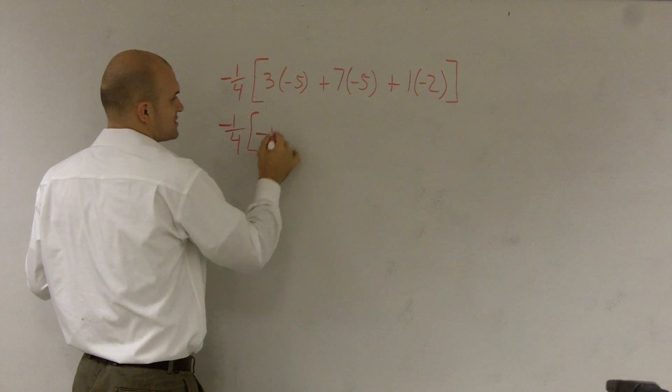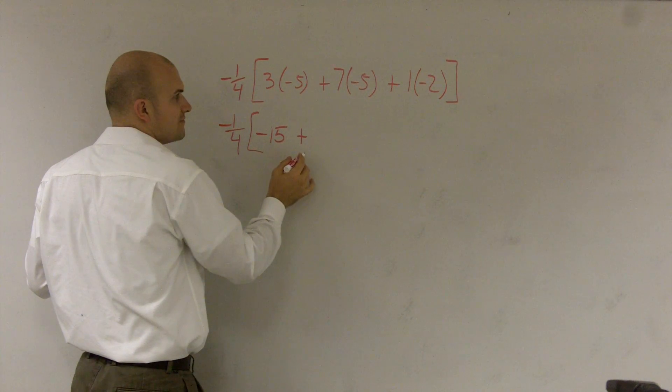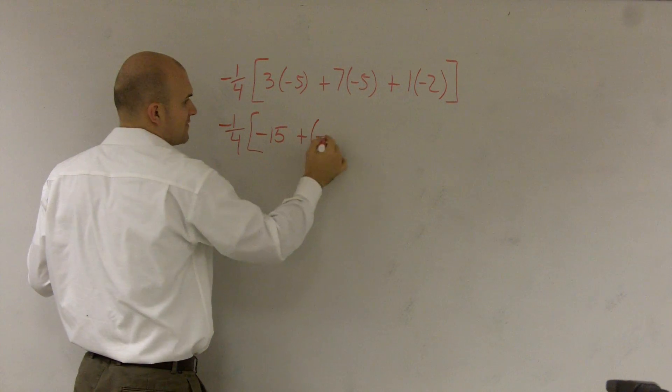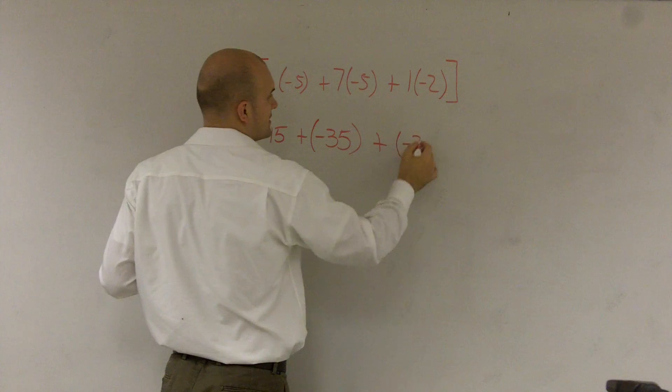I do 3 times -5, which is -15, plus 7 times -5, which gives me -35, plus 1 times -2 gives me -2.